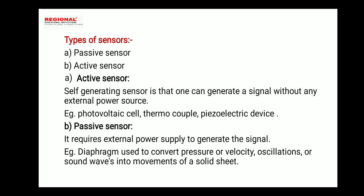A passive sensor requires an external power supply to generate the signal. For example, velocity, oscillation, and sound waves are converted using a diaphragm — this is a passive sensor in operation.